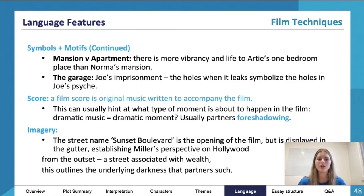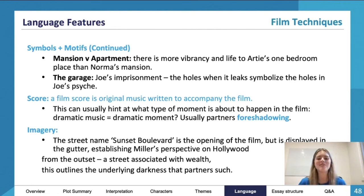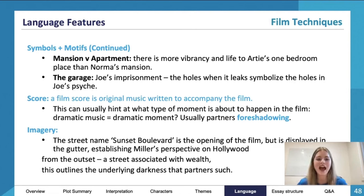And imagery: the street name Sunset Boulevard is the opening of the film, but displayed in the gutter. It definitely establishes Wilder's perspective on Hollywood, which is in the gutter — and that's established pretty much immediately. It's a street associated with wealth and affluence, and it partners a much more underlying darkness to the industry.